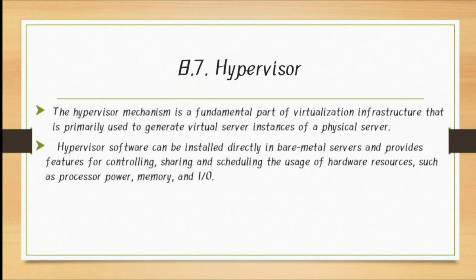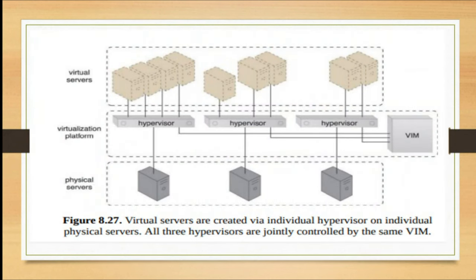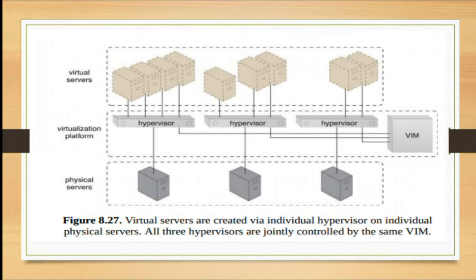With the help of a diagram, here is an overview of how you can use hypervisor. Hypervisor can run on a physical machine, and with the virtualization platform, numbers of physical virtual servers can be created. Virtual servers are created via individual hypervisors and individual physical servers. All three hypervisors are joined commonly using the same VIM, so using a VIM you can see all the hypervisors connected with each other. This is your normal hypervisor setup — a physical machine with hypervisor software — and with all the required numbers you can create virtual servers.